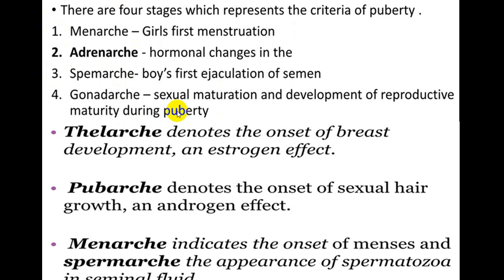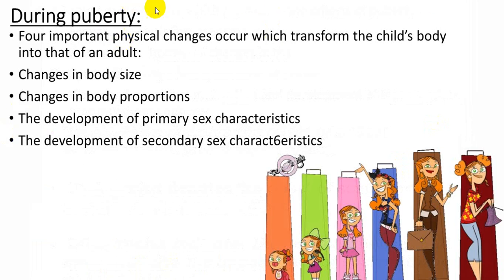So these are the different stages: development of the breast is thelarche, development of secondary sexual characters particularly pubic hair due to androgen effects is pubarche, onset of menses is menarche, and first appearance of spermatozoa in seminal fluid is spermarche. During puberty, you start getting physical changes like body size, body proportion, development of primary and secondary sex characters.